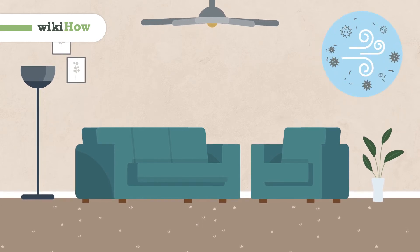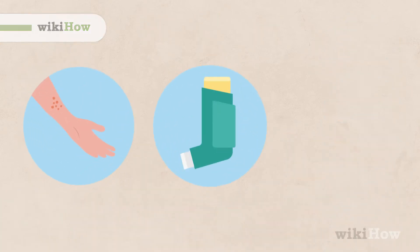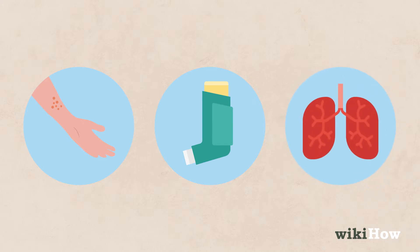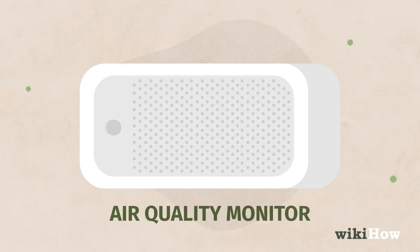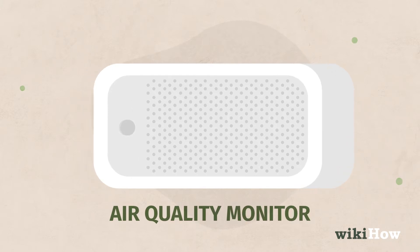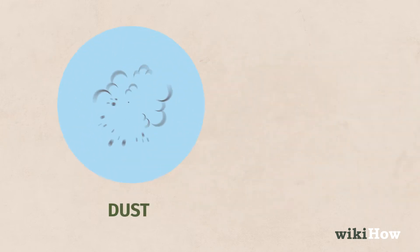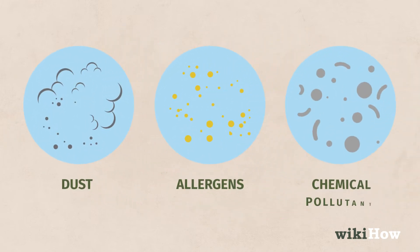Poor air quality in your home can cause allergies, asthma, and other health problems. You can monitor your indoor air quality using an air quality monitor. It will check your air for particulate matter like dust and allergens, as well as chemical pollutants like volatile organic compounds.